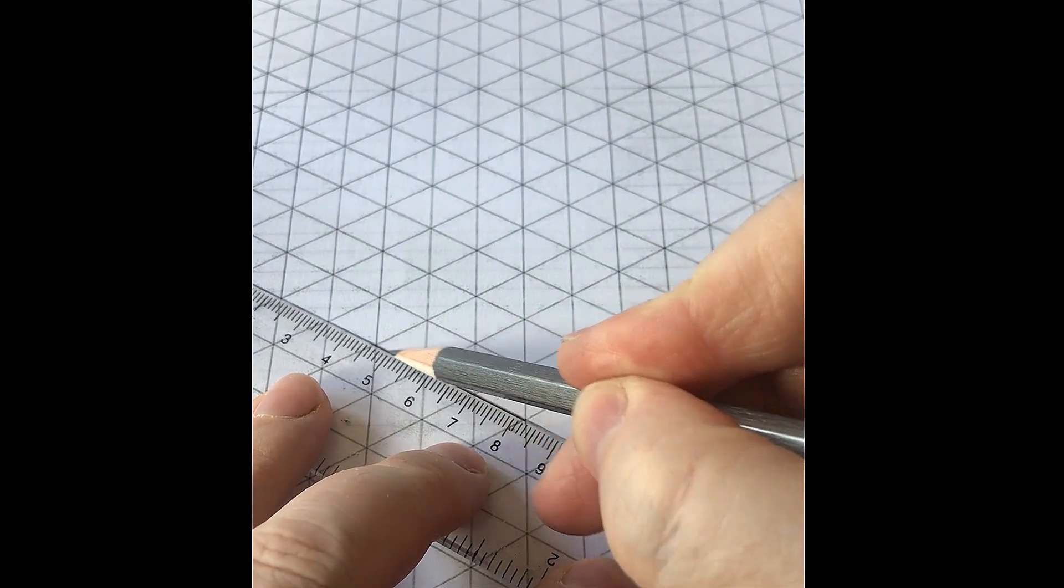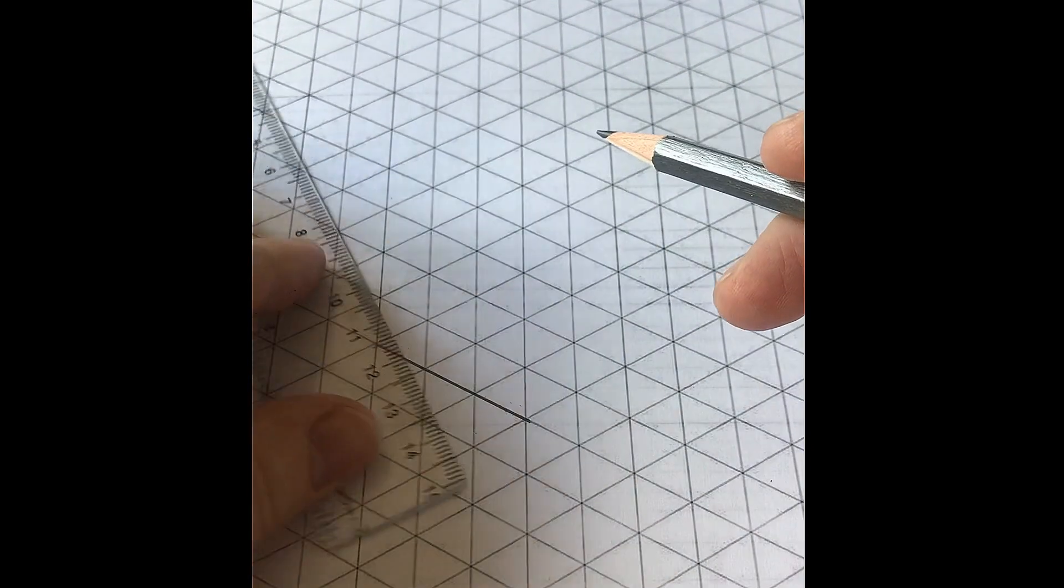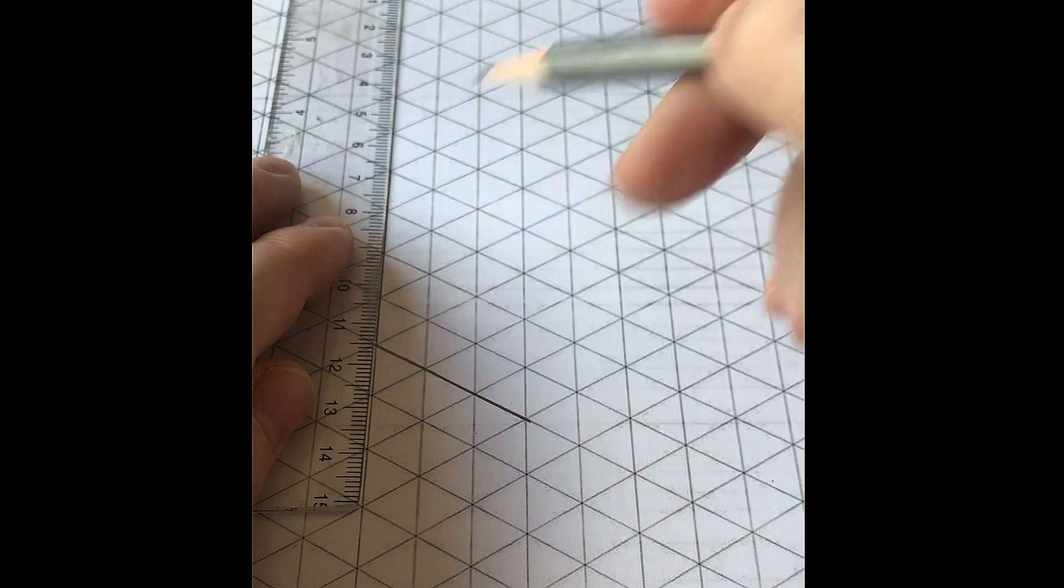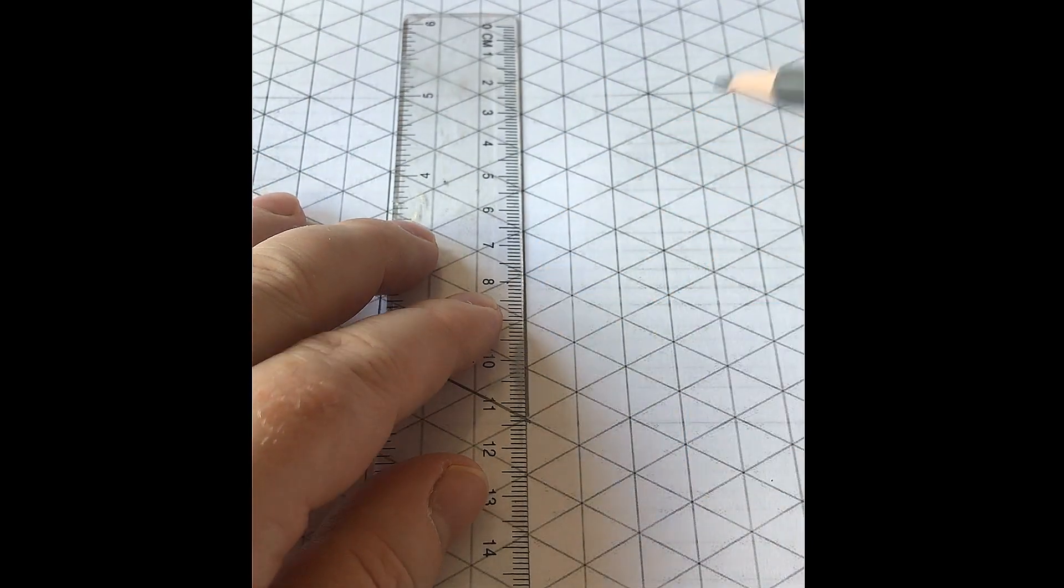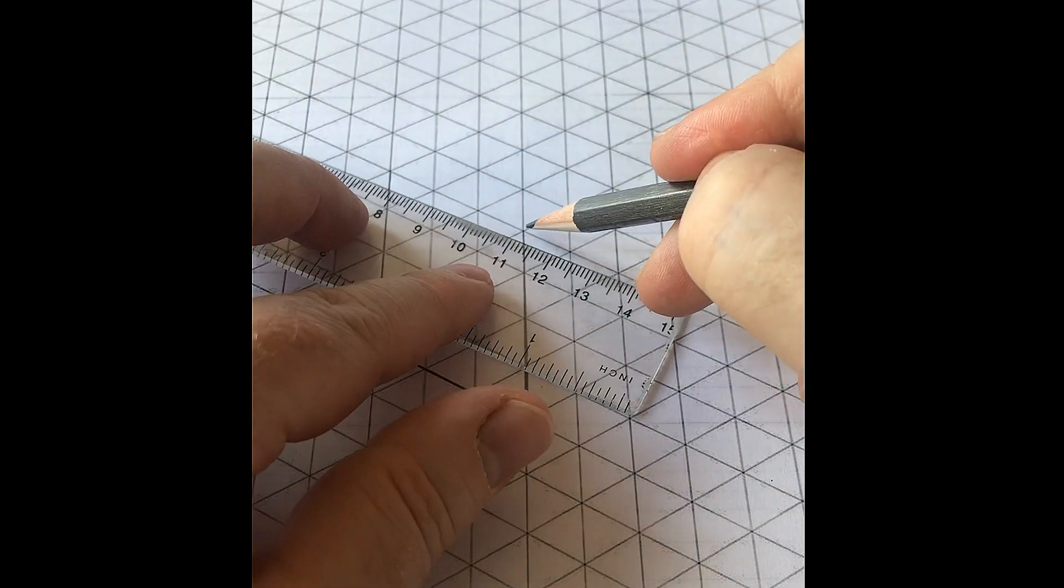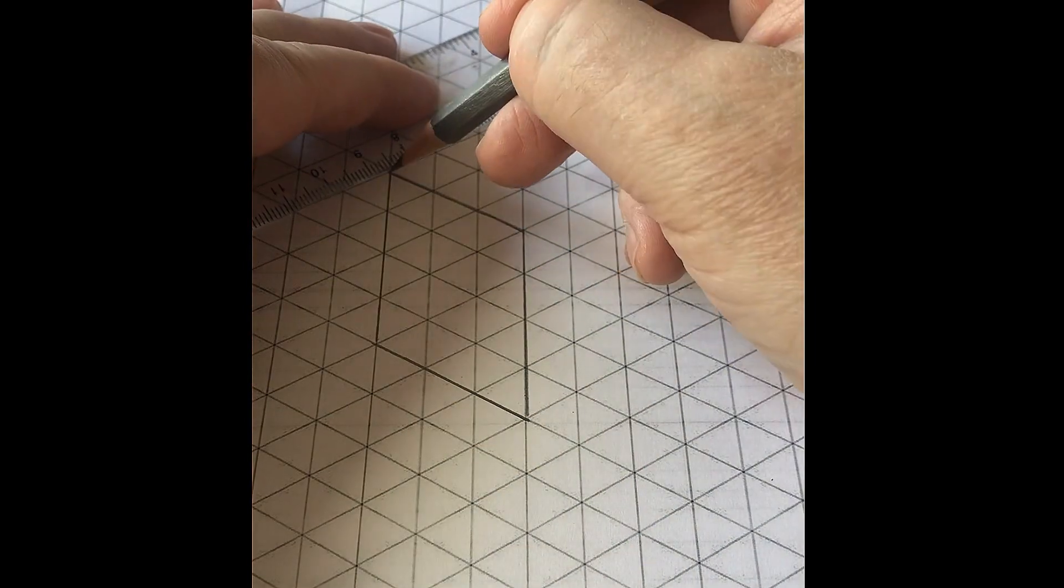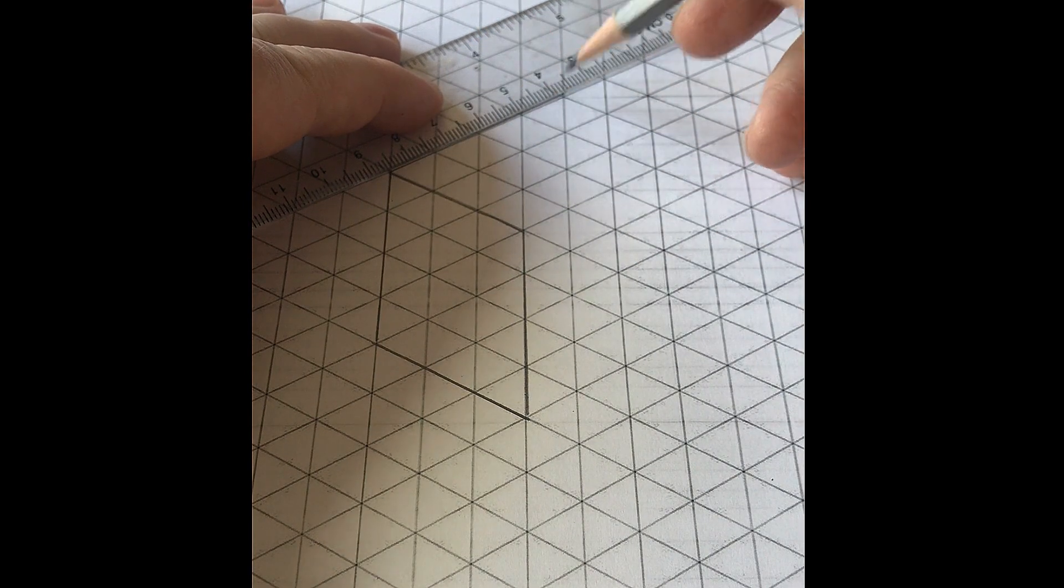It's always best to begin with simple shapes if you're drawing isometric drawings for the first time. As you can see here, we'll start with a simple shape.